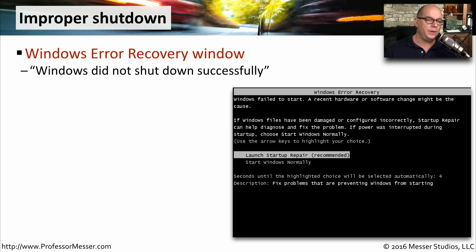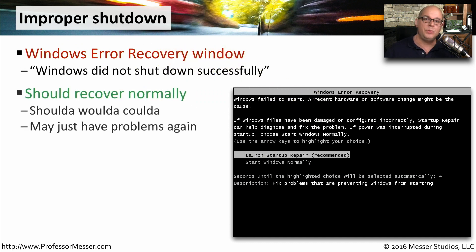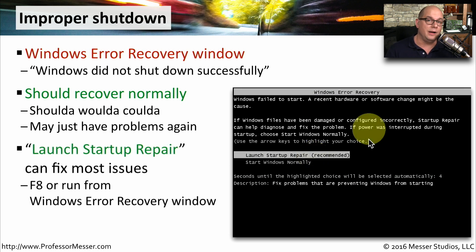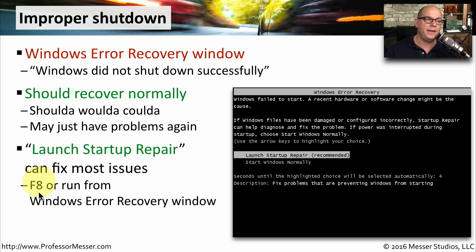If you start up your computer and get the Windows error recovery screen, it will tell you that Windows did not shut down successfully. If you think you know why, you may simply want to choose to start Windows normally. If this is occurring often and you aren't certain why, it might make more sense to launch startup repair to fix the issue. You can also trigger this by pressing F8 when the system starts, or simply choose launch startup repair from the Windows error recovery screen.